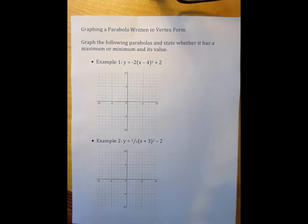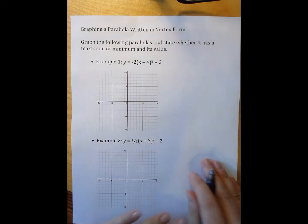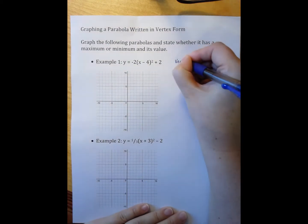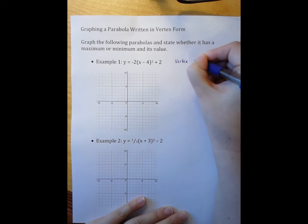These notes are on graphing a parabola when it is written in vertex form. So in order to graph the parabola, I need three pieces of information. I need the vertex and I need the a value.